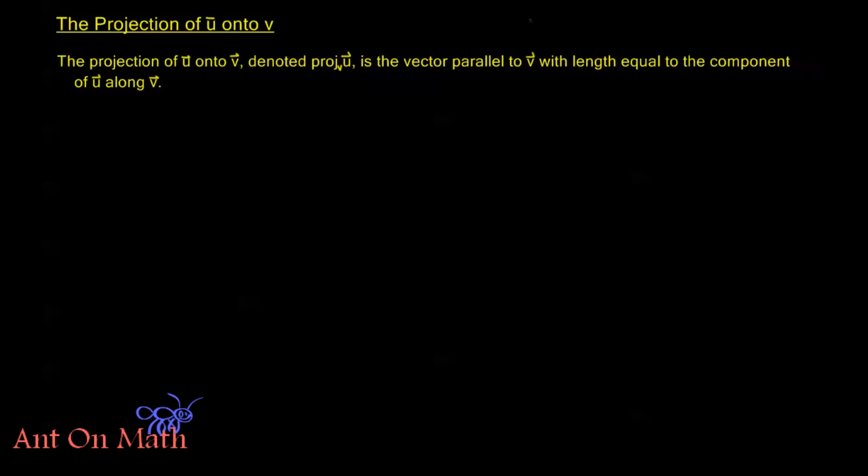So we have these vectors u and v. The projection of u onto v, which we denote as proj_v(u), is the vector parallel to v with length equal to the component of u along v.